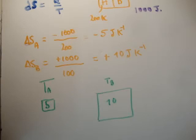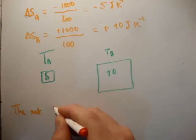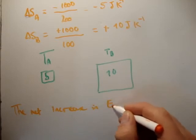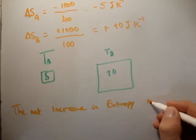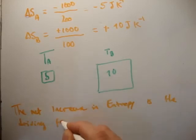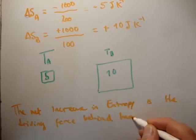So basically what we're actually saying here is that fundamentally, the net increase in entropy is the driving force behind the flow of heat. I'm just going to write that in words, that the net increase in entropy is the driving force behind heat flow.